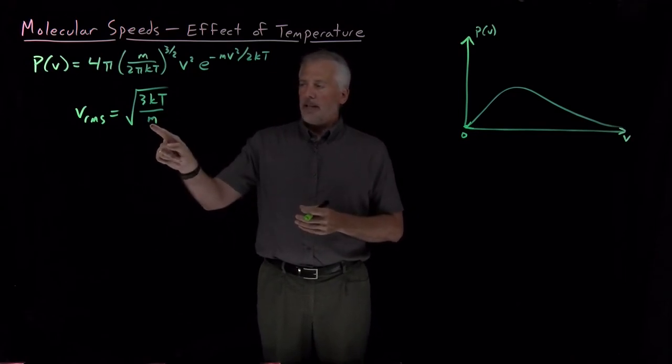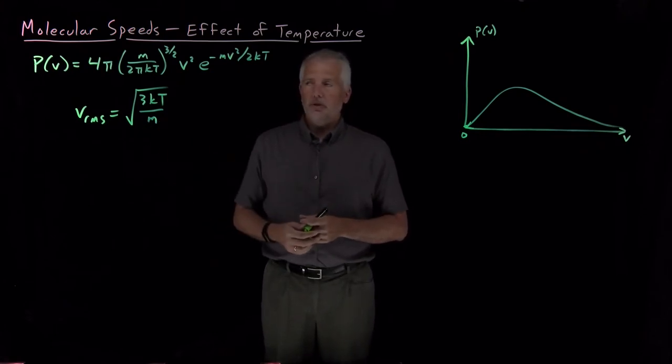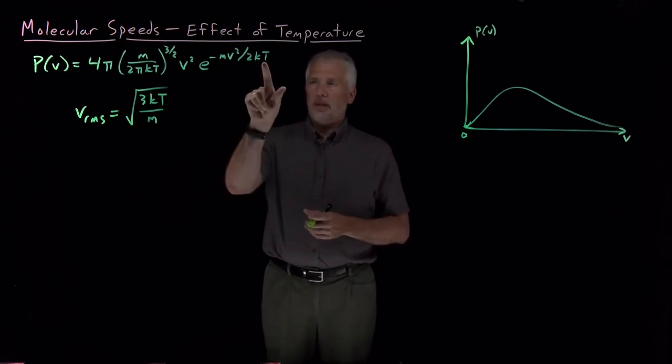Certainly the mass has an effect on the distribution of the speeds of the molecules, but also the temperature has an effect as well. Temperature shows up in the distribution.